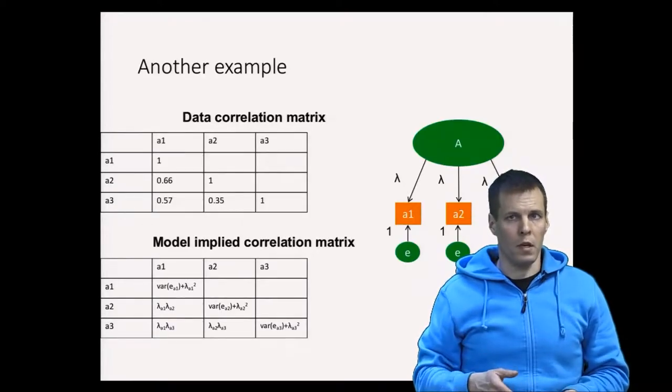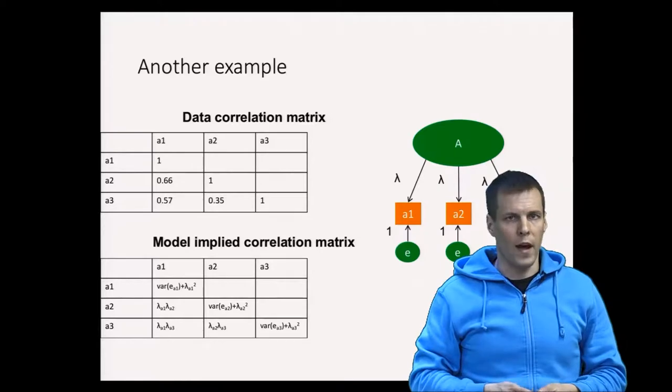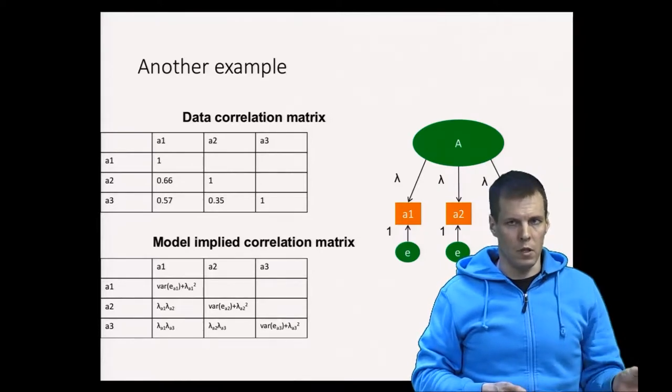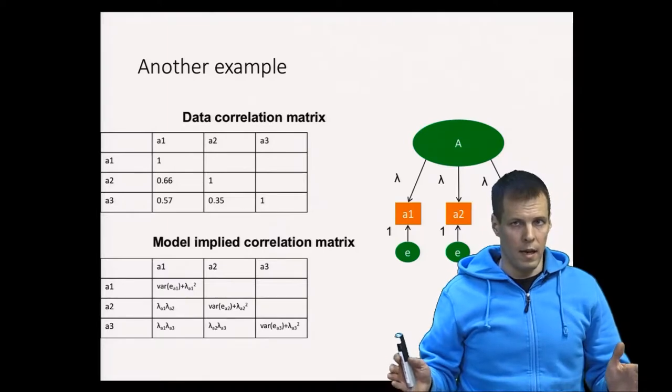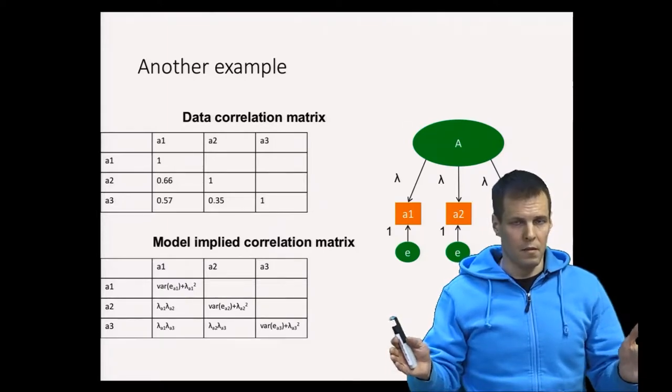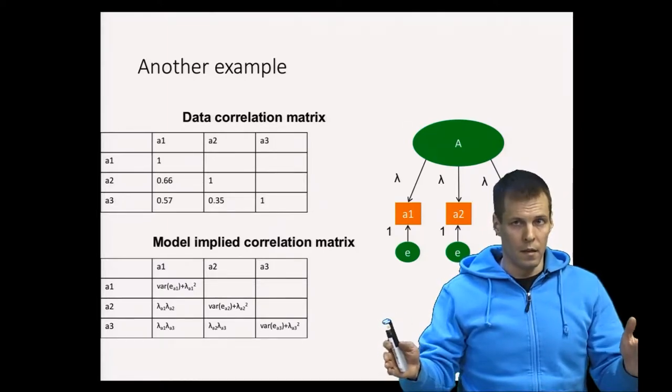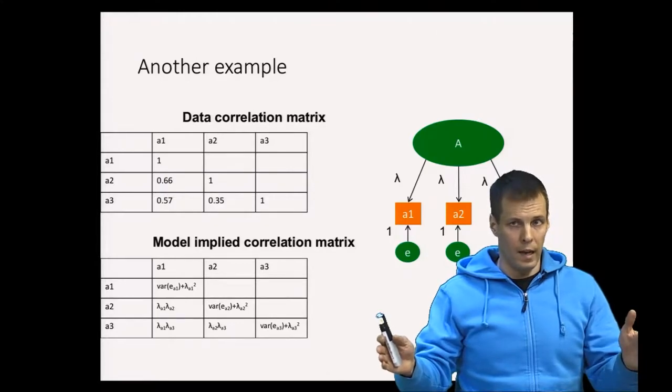So the idea of a Heywood case and admissibility is that all variances must be positive because a variance quantifies the degree of variation and something can't have a negative variance. It's like you can't have negative length for example.